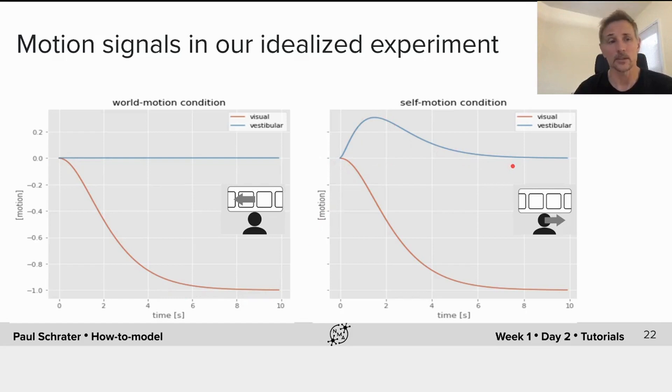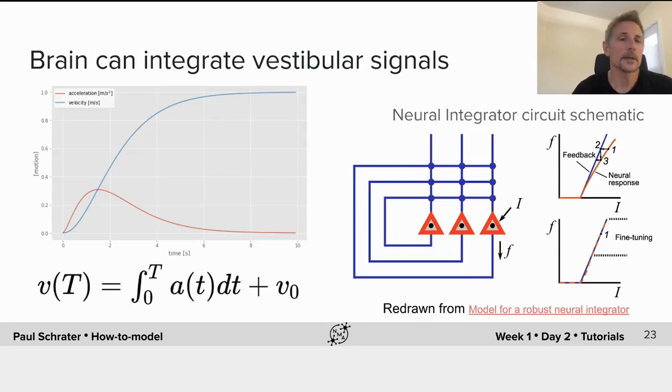One of the critical backgrounds for the vestibular system is that the brain can integrate these signals. Neural integrators exist.